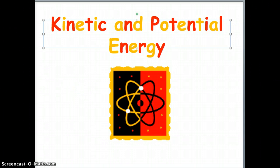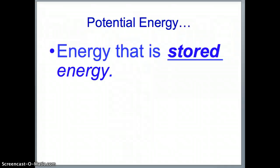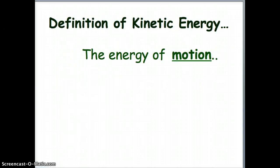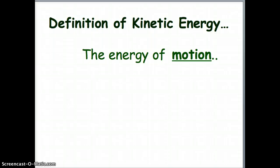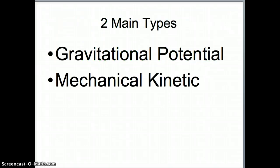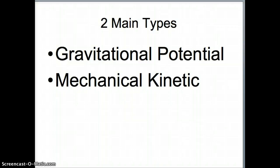The first thing you need to know is basically what is potential and what is kinetic. Potential is essentially stored energy — an object might not be doing anything in particular, but it has the ability to do work, so energy is stored inside it in some way. Kinetic is energy of motion. There are many different types of potential and kinetic, but today we're focusing on the two most common: gravitational potential and mechanical kinetic. Throughout this presentation when I say potential and kinetic, I'm referring to those two types.